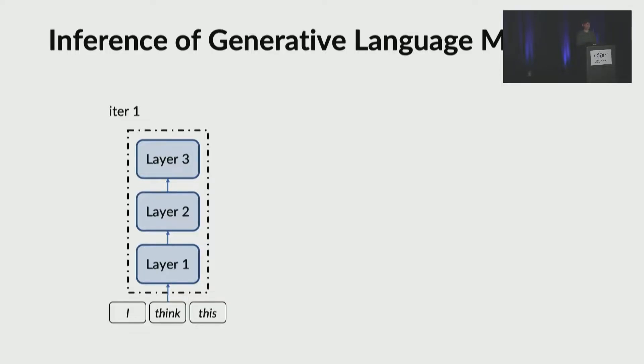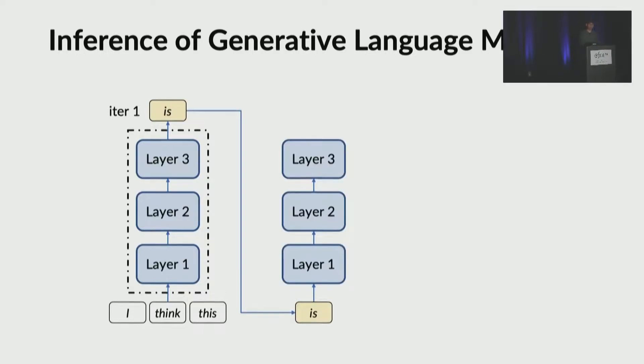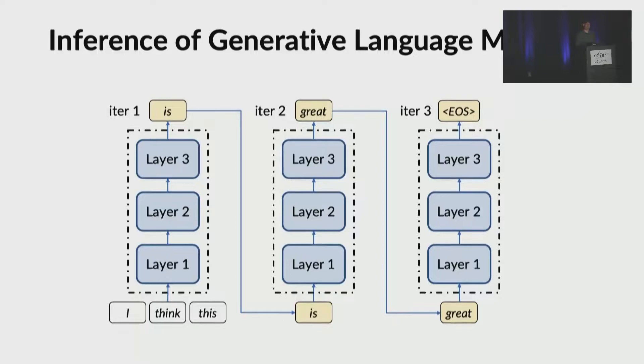The inference process is iterative. The first iteration processes I think this. The model generates is as an output. The first output token is fed as the input token to the next iteration. In iteration two, we process the is token and we have the output token great. This process repeats. In the third iteration, the previously generated token great is used as the input token. In iteration three, the special token end of sentence is generated. Thus, the process stops. The generation process stops when it hits the special token or reaches the maximum token length.